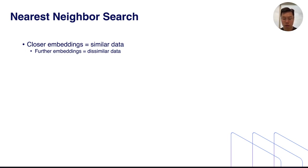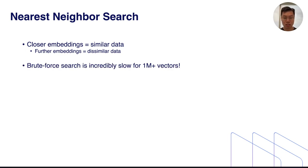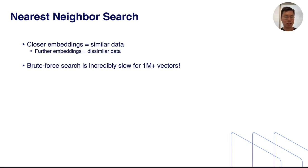Now that we understand embeddings, I want to talk about nearest neighbor search. Nearest neighbor search is about finding similar data — as embeddings are closer to each other we get more similar data, and further embeddings means more dissimilar data. This is great and allows things like recommender systems and deduplication. However, brute-force search is incredibly slow for anything above one million vectors. If you have internet-scale datasets — a billion or ten billion vectors — it's untenable to build a real-time system with brute-force nearest neighbor search.